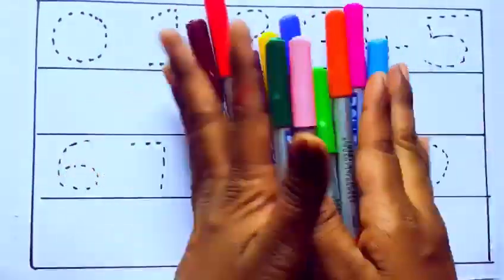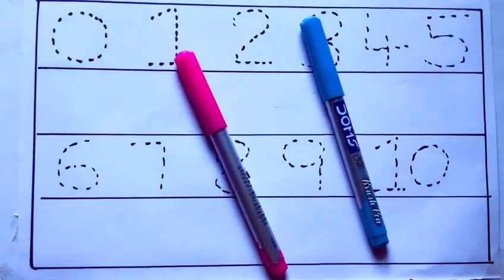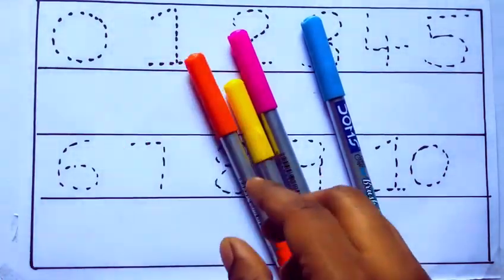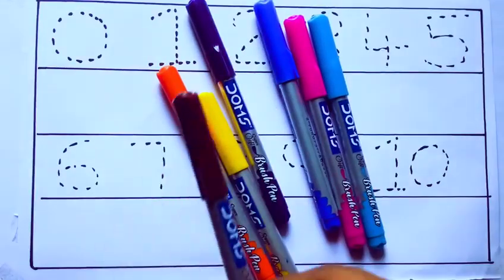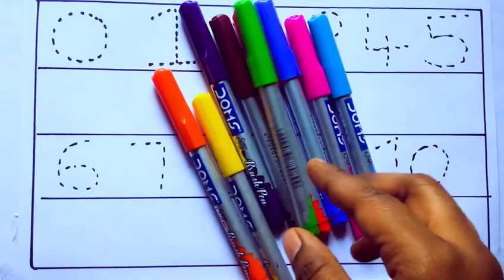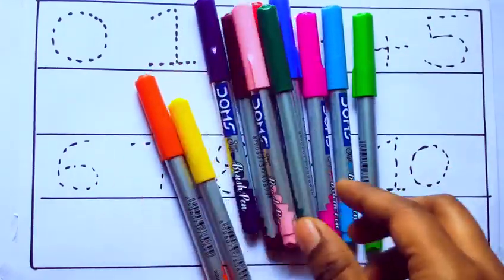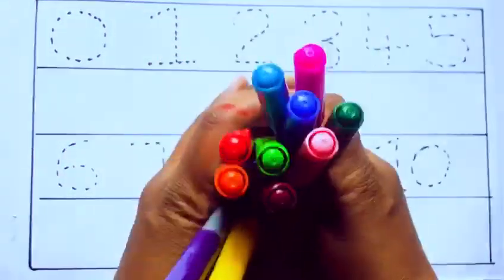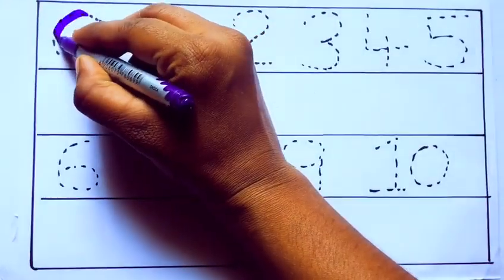Let's learn some colors. These are all the color pencils. Let's learn the names: sky blue color, pink color, yellow color, orange color, violet color, blue color, brown color, red color, green color, blue green color, and pink color.